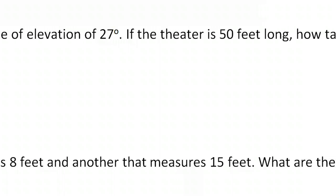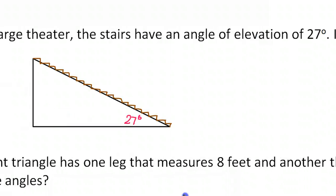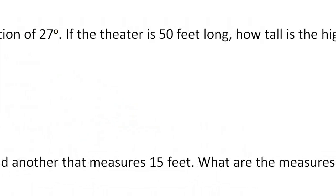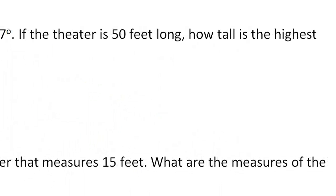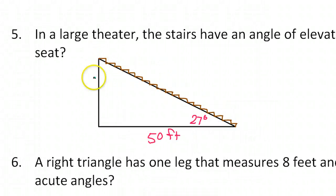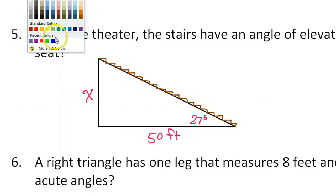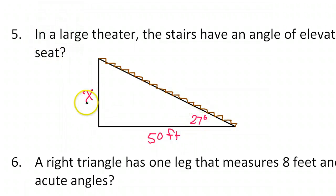The theater is 50 feet long — I interpret that to be this base length. The highest seat is going to be up here, so we're being asked for the height right here. From the perspective of the 27 degrees, this height is opposite — it's the opposite leg — and this length of the theater is the adjacent leg.